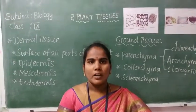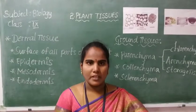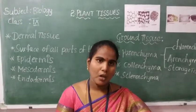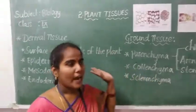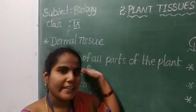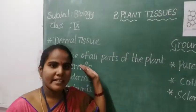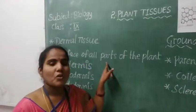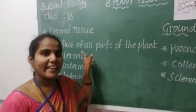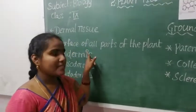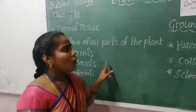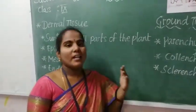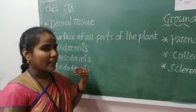Now we will discuss in detail about the dermal tissue, ground tissue, and vascular tissue. Coming to the dermal tissue: the dermal tissue is present on the overall surface of all parts of the plant body. Based on location and function, we will see three types of dermal tissue.